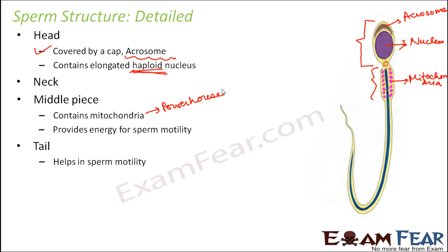Finally, the tail helps in sperm motility — it acts like a long flagella which helps in the movement of the sperm. A sperm not only needs to move inside the male body — from the testes through the vas deferens, ejaculatory duct, and urethra — but also inside the female's body. When sexual intercourse takes place, sperms are released in the vaginal area, but they have to travel all the way to the fallopian tube where the eggs are. So sperm motility is very important, and that is why the tail of a sperm is also very important.